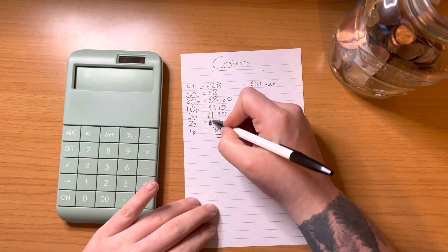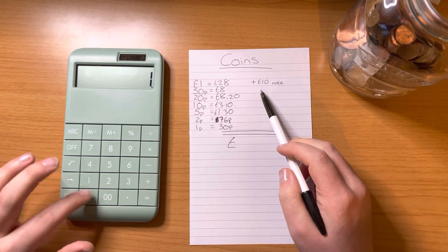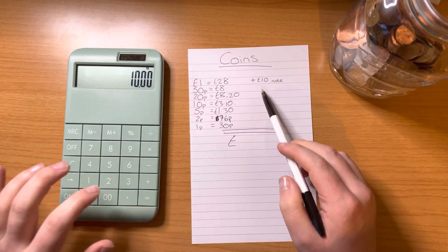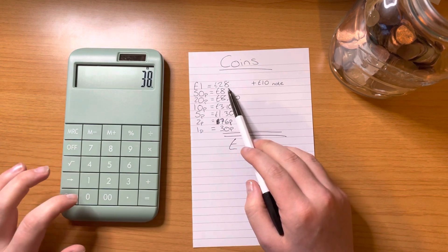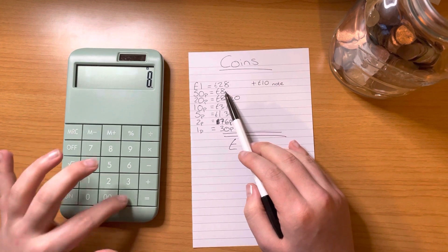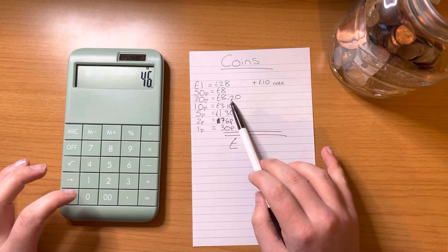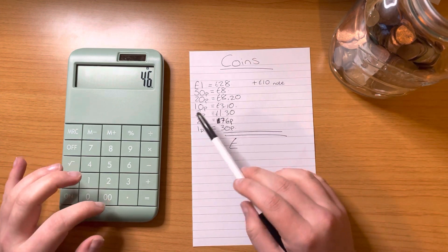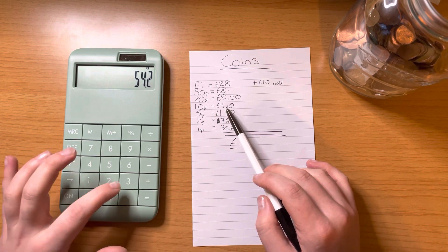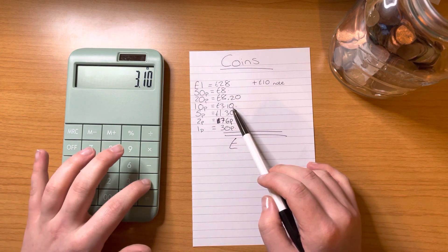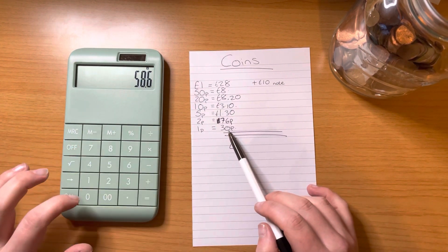I thought I had £7 something of 2ps—no, not quite. So we're going to add the £10 to start with, then we add £28 worth of pound coins, then £8 worth of 50ps, then we had £8.20 worth of 20ps because I found that last 20p in with the coppers. So £8.20 plus £3.10 of 10ps, plus £1.30 of 5ps, then we had 76p of 2ps, and then we had 30p worth of 1ps.